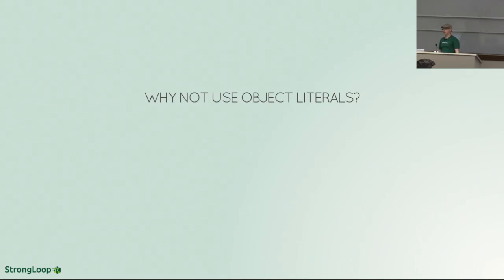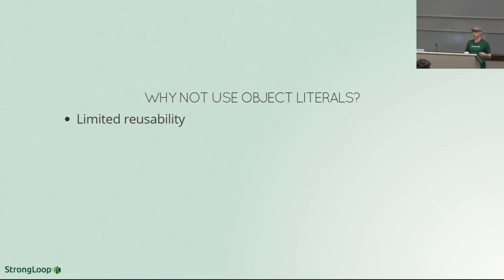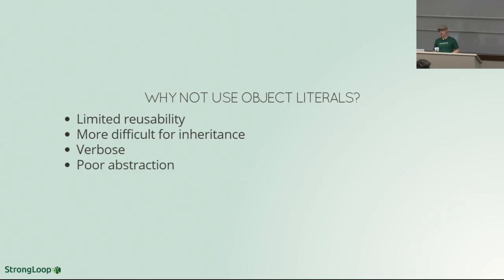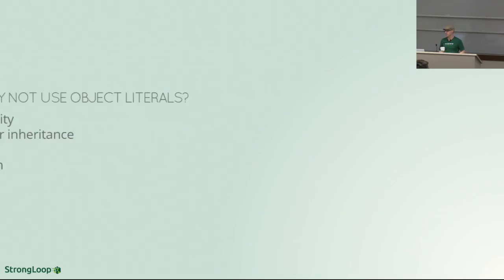So why not just always use object literals? A lot of limited reusability — you're recreating these things over and over. They're much more difficult to use in your application code because you have to recreate them all the time. They're very verbose. And they are really poor abstractions for the actual thing you're trying to model. If we're trying to model a dog, creating a new instance each time from that JSON object is just not a good abstraction.